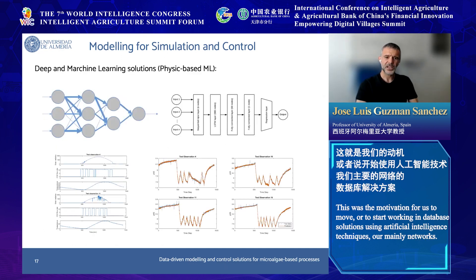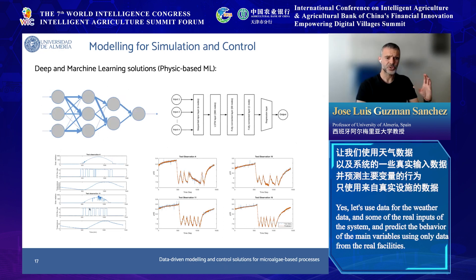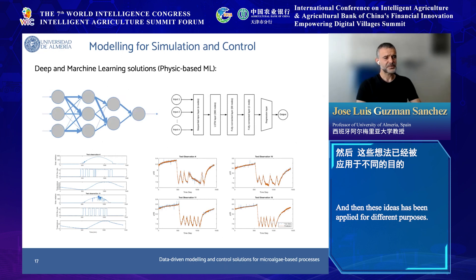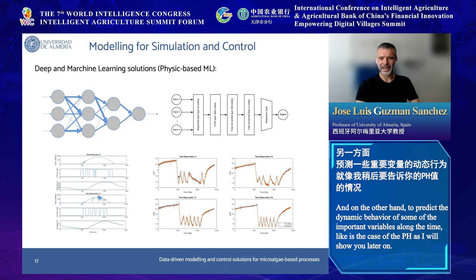This was the motivation for us to move to data-driven solutions using artificial intelligence techniques — mainly neural networks. The idea is to use weather data and real system inputs to predict the behavior of the main variables using only data from the real facilities. This has been applied for two main purposes: microalgae classification, since they are microscopic organisms and very difficult to classify, and predicting the dynamic behavior of important variables over time, such as pH.